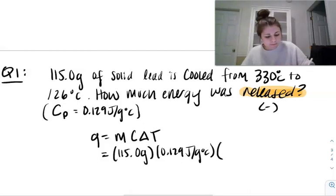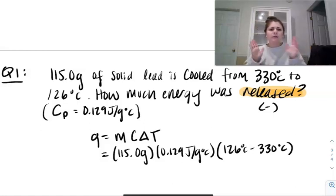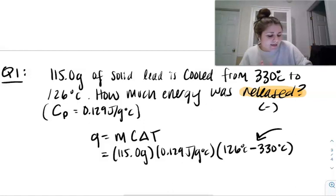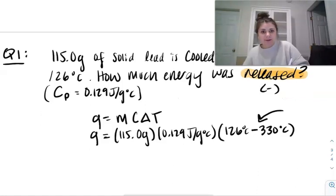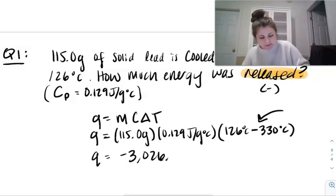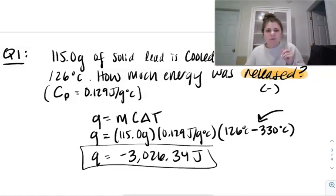So unlike the phase change before I solve this, we had to manually put that negative value for delta H. Thankfully, we will not have to do that for temperature change problems. Because if you look here, this negative for T final minus initial actually gives us the negative right then and there. So that's super nice that we don't have to do that. So let's get on to the answer. You should have gotten your answer as negative 3,026.34 joules. All right. Let's try one more.